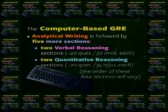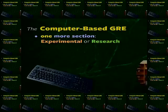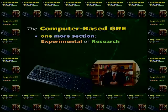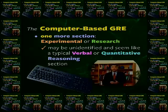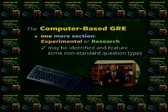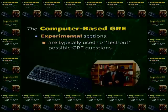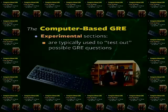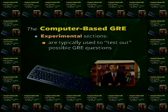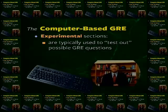This leaves one more section, either an experimental section or a research section. It may be unidentified and seem like a typical verbal or quantitative reasoning section — this would describe an experimental section. Or it may be identified and feature some non-standard question types — this would characterize a research section. An experimental section is typically used to test out questions for possible use on the GRE in the future. These are questions that ETS wants to test to see whether they're too hard, too easy, or simply don't make clear sense to the test takers.